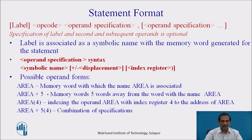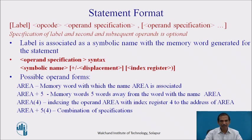A label associates a symbolic name with the memory word generated for the statement. The operand specification syntax involves a symbolic name followed by a displacement which may be positive or negative, followed by optional index registers. For example: 'area' refers to the memory word associated with name area; 'area+5' indicates memory words 5 words away from area; 'area[4]' involves indexing with index register 4; and 'area+5[4]' involves a combination of these specifications.